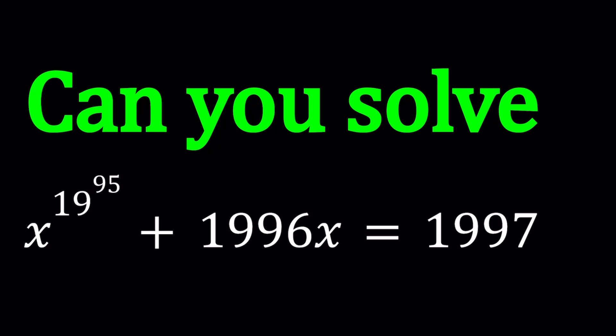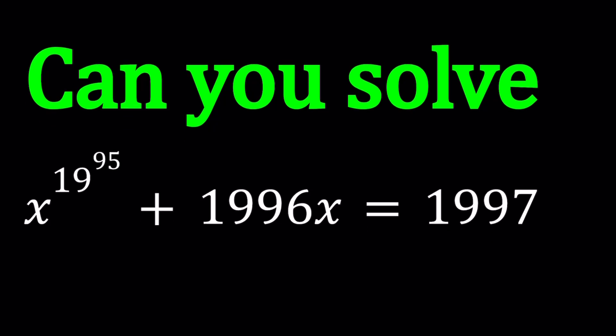It's a really well-constructed beautiful problem. I'd like to call it gorgeous. Now how do you solve a problem like this? First of all, this is a polynomial equation: x to the power of some very high power plus 1996x equals 1997. It has how many solutions? The fundamental theorem of algebra says if you have an nth degree polynomial, it's supposed to have n complex roots. Complex roots obviously include real roots.